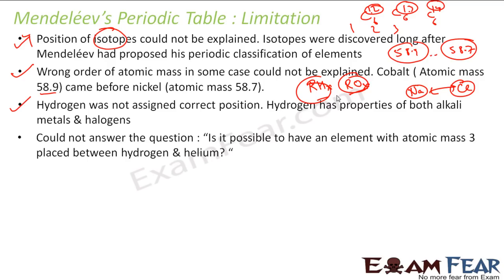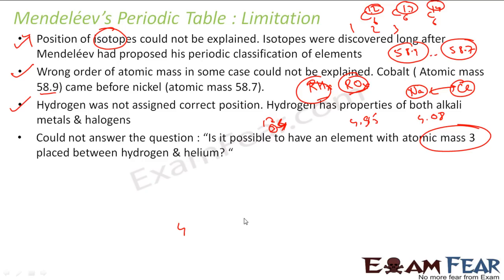He also could not answer the question: is it possible to have an element with atomic mass 3 between hydrogen and helium? Hydrogen has atomic mass 1 and helium has atomic mass 4. Since atomic mass is a decimal number — not a natural number — you cannot say how many values can exist between any two atomic masses. Between 4 and 4.5, there could be 4.1, 4.2, 4.3, and so on.